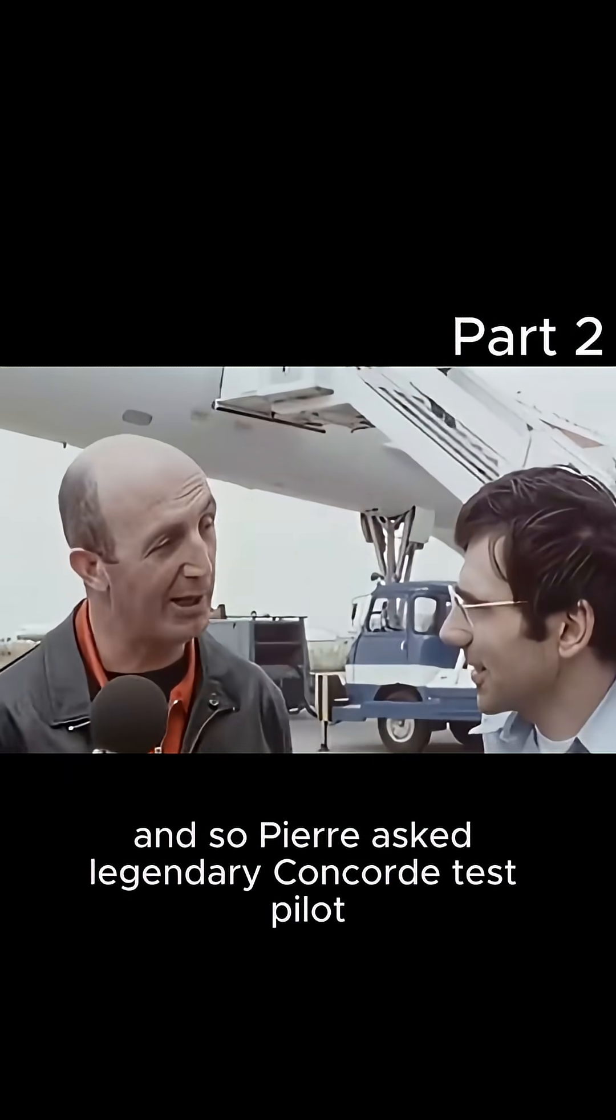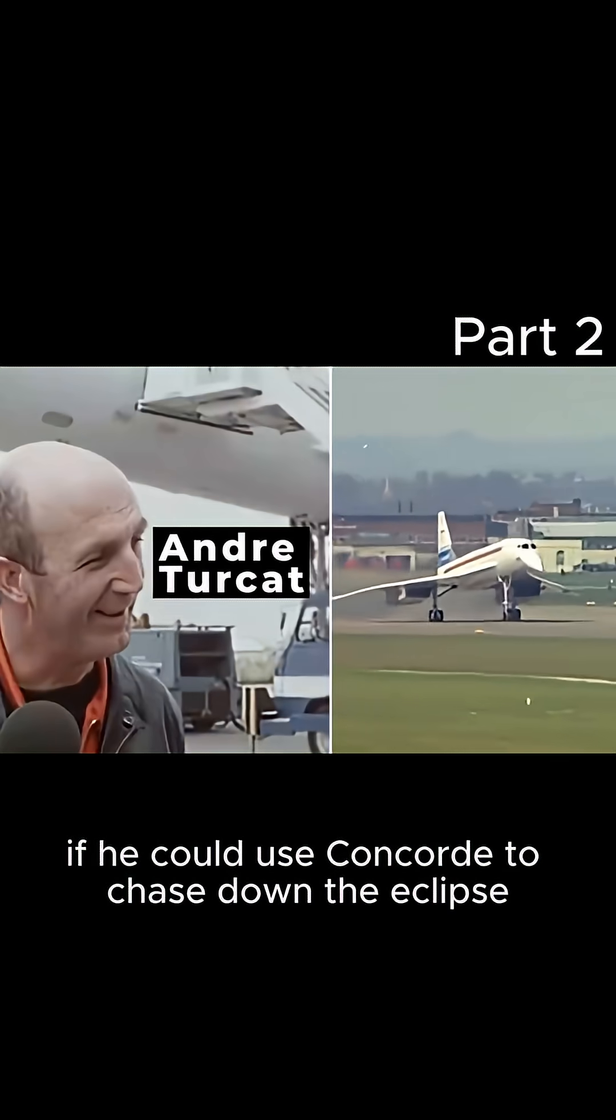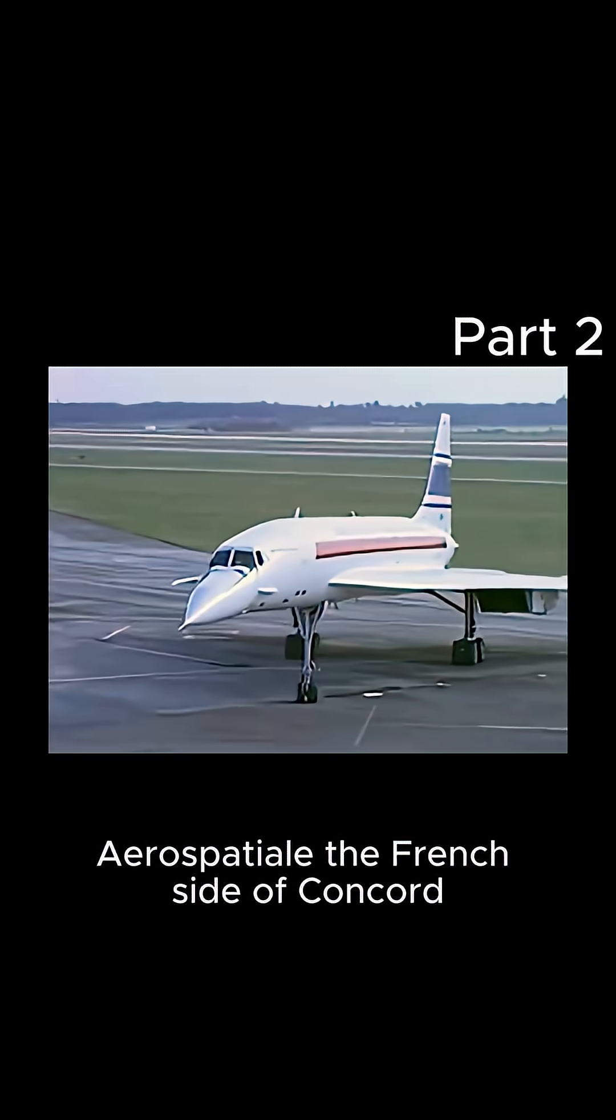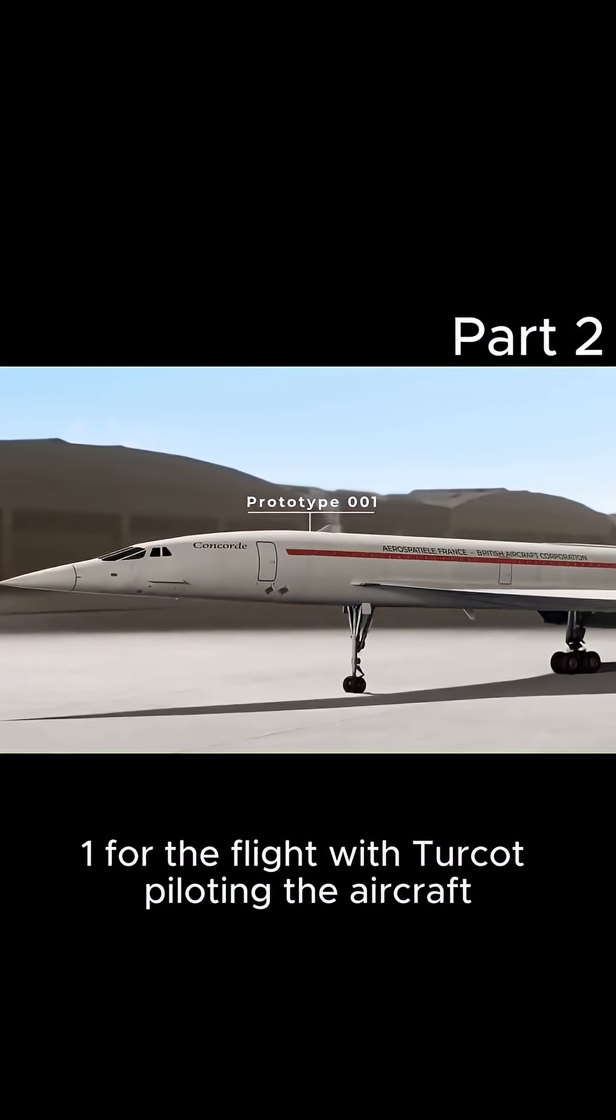And so Pierre asked legendary Concorde test pilot André Turquat if he could use Concorde to chase down the eclipse and fill the plane with science equipment. Aero Spatial, the French side of Concorde, were excited about the idea and let him use prototype 001 for the flight, with Turquat piloting the aircraft.